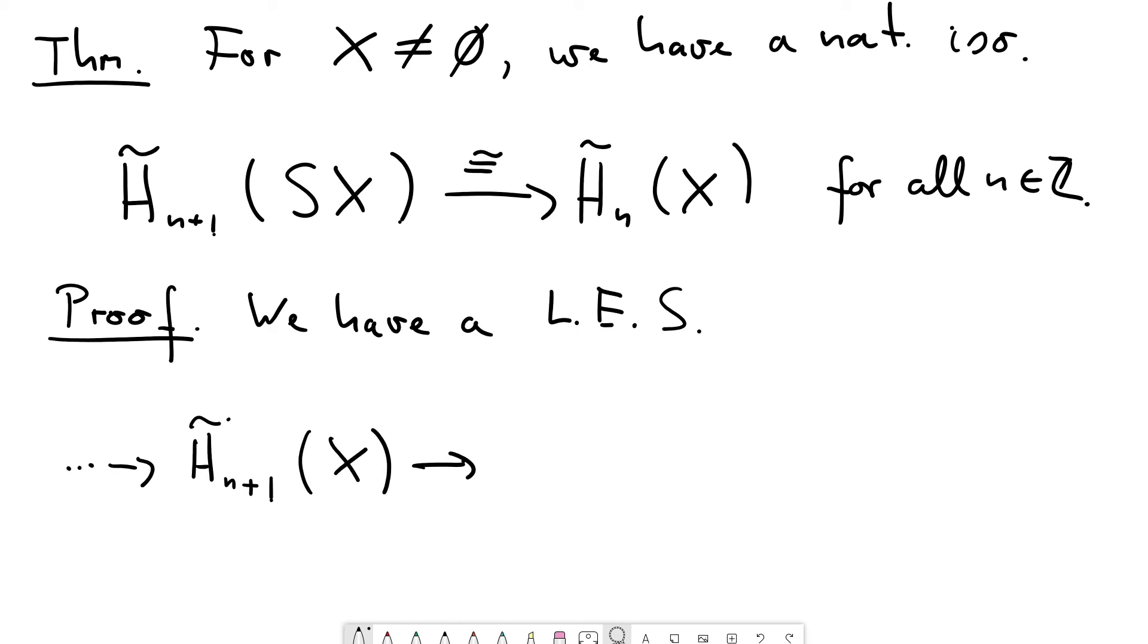Then comes the (n+1)-st reduced homology of the cone. And then comes the (n+1)-st homology of the quotient space. And the quotient CX mod X, this is precisely what the suspension is. So this goes here. And then comes the boundary homomorphism to the reduced n-th homology of X. And again, the n-th reduced homology of the cone.